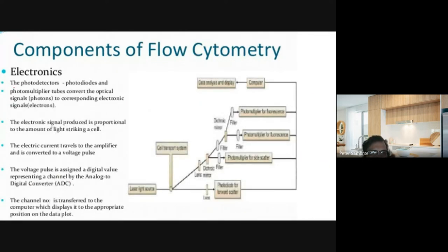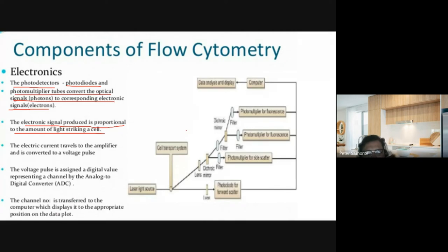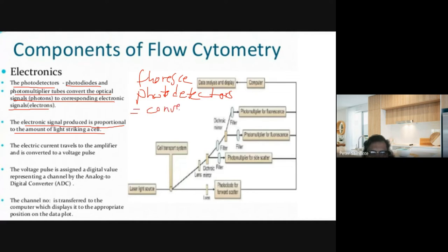In flow cytometry, a cell enters a high-pressure sheath — a passageway. Lasers hit the cells one by one as they pass through, and once hit by lasers they fluoresce. This fluorescence is recorded by a system of optical mirrors and filters, which direct the specific wavelength of light to the designated photodetectors. You are essentially measuring wavelengths. After fluorescence is detected by the photodetectors, it is converted into numbers — WBC count and so on.